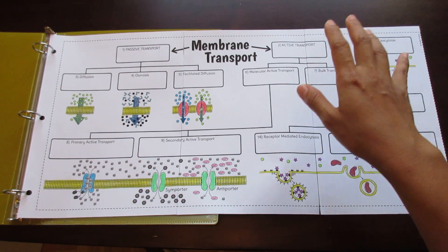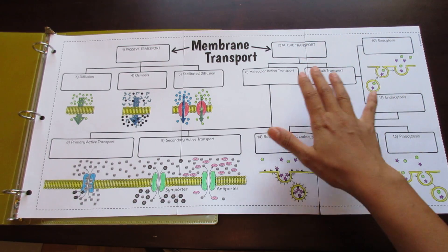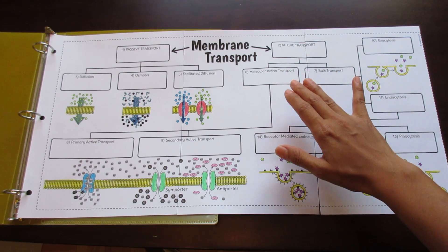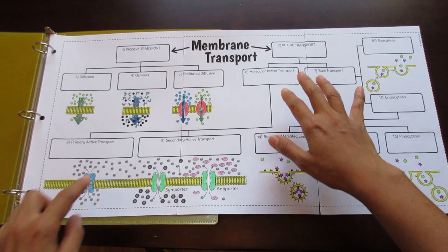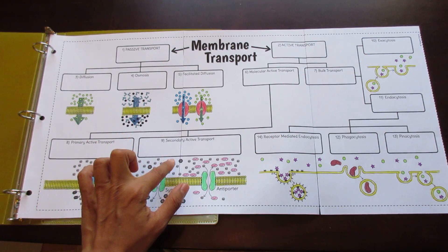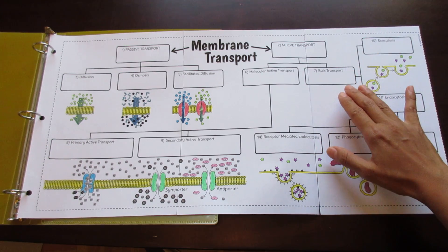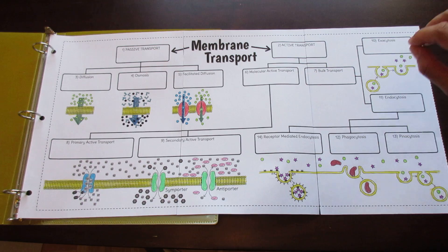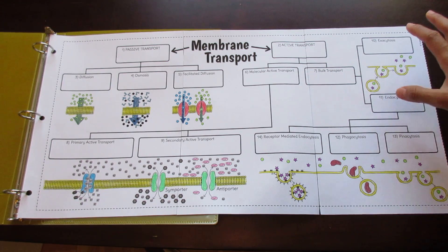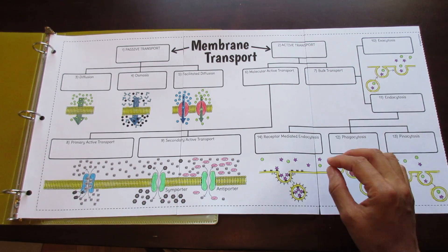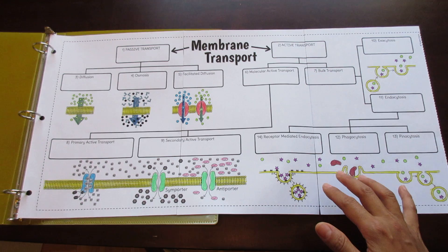For active transport, this is divided into molecular active transport and bulk transport. Molecular active transport involves protein transporters and is further divided into primary active transport and secondary active transport. For bulk transport, this is any transport that involves vesicles, further divided into exocytosis and endocytosis. Endocytosis is further divided into phagocytosis, pinocytosis, and receptor-mediated endocytosis.